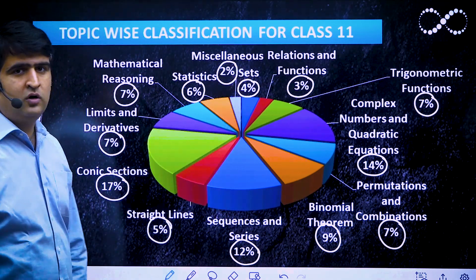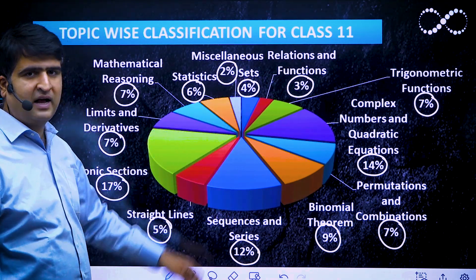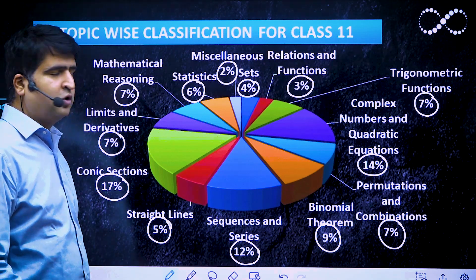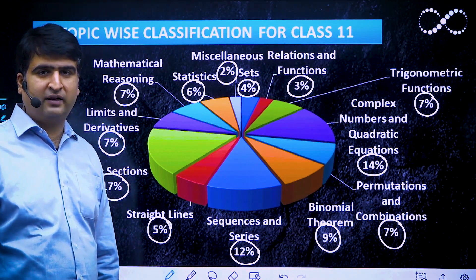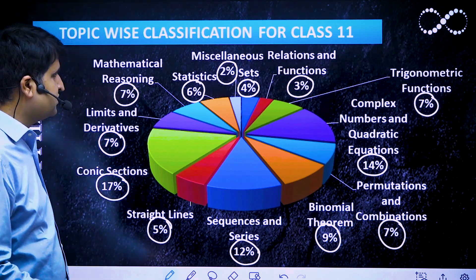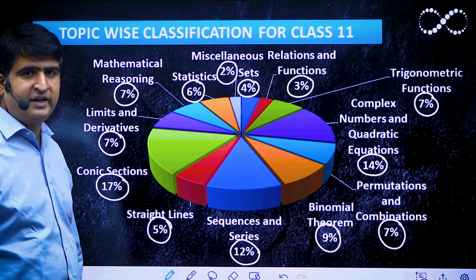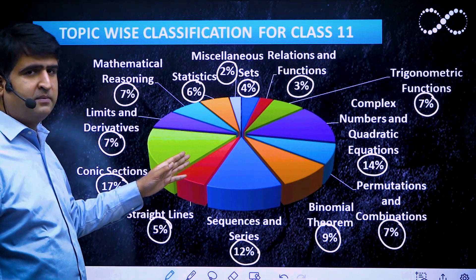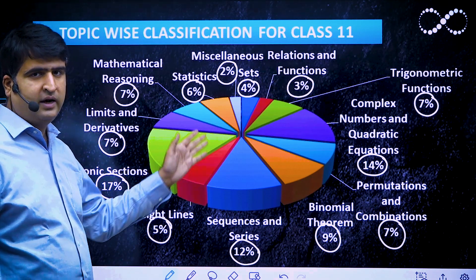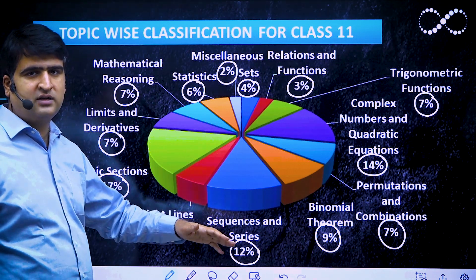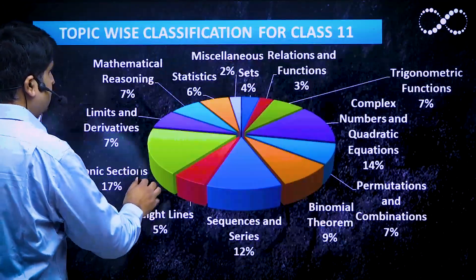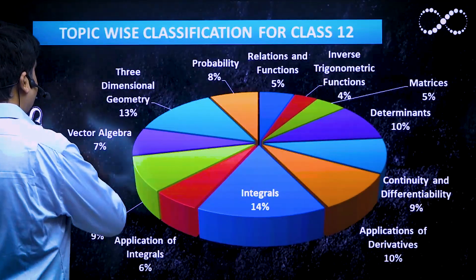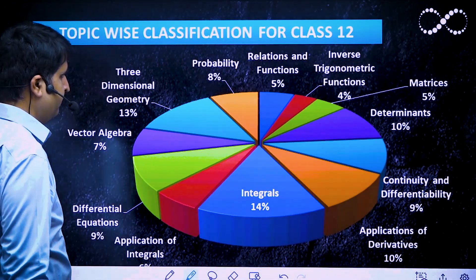We've left Probability of Class 11 here because most questions asked are from Probability of Class 12. We've also skipped 3D Geometry because those questions are mostly asked in the Class 12 syllabus.